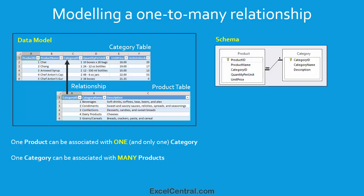Let's look at the information we can glean from this schema. There are two tables: the Product table and the Category table. I can tell that the primary key of the Category table is CategoryID, because there's a little key symbol next to it. In the Product table, the primary key is the ProductID. I can also see there's a relationship between CategoryID in the Product table — that's the foreign key — and CategoryID in the Category table, that's the primary key. The Category table is on the one side of the relationship, and the Product table is on the many side. So one category can be used by many products, but each product is only ever in one category.